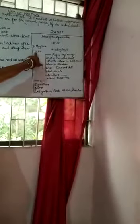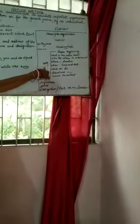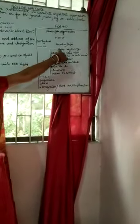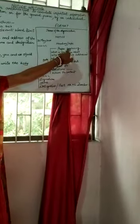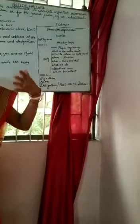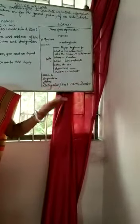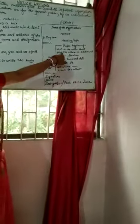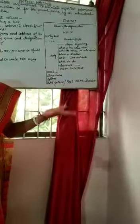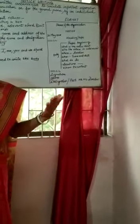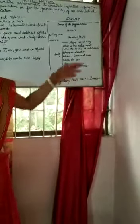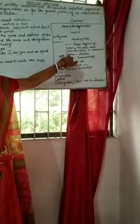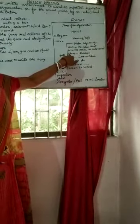You leave one line and then start the body of the notice. There should be a proper beginning. The body should answer: what is the notice about — like a debate competition, art competition, or blood donation camp — and who the notice is addressed to, whether students, the public, or any other person. Then you answer where, meaning the location where the function is going to be held.